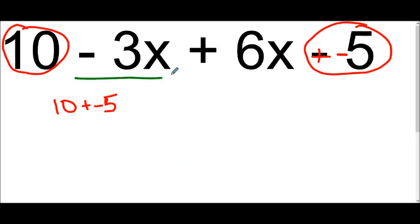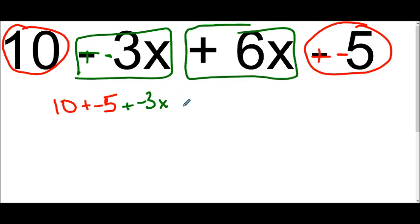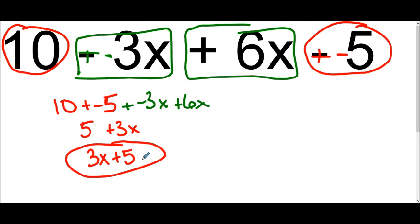The other term that we have here is a negative 3x. And who would its like term be? The positive 6x. So I can just add these together. I have 10 and negative 5, which will make 5. And I have negative 3 and positive 6, which will make a positive 3x. However, this is not currently in standard form. So we need to make sure that our answer is in standard form by just flipping those around. 3x plus 5. Now it's in standard form. So now I have my answer.